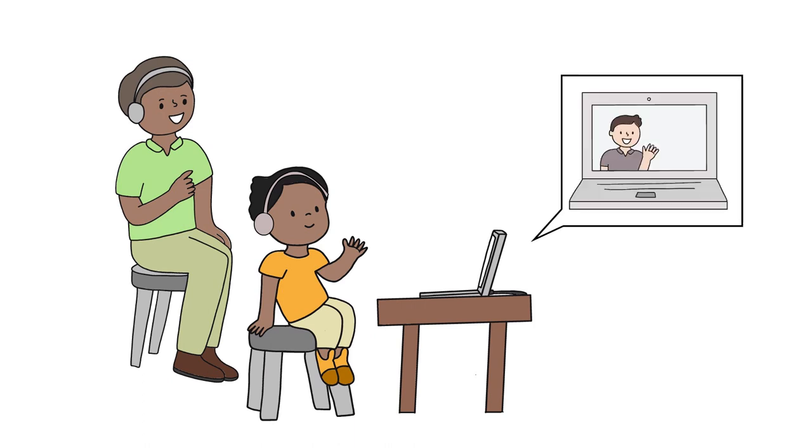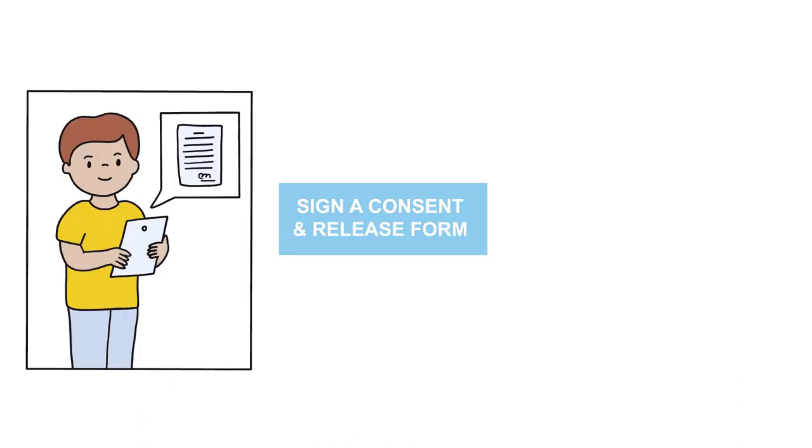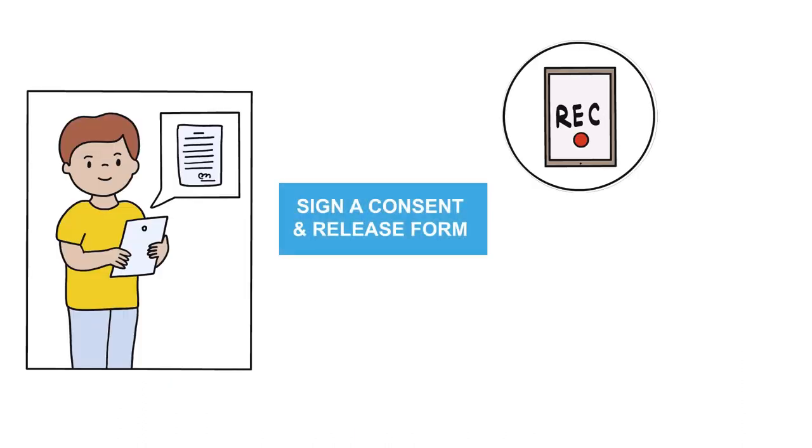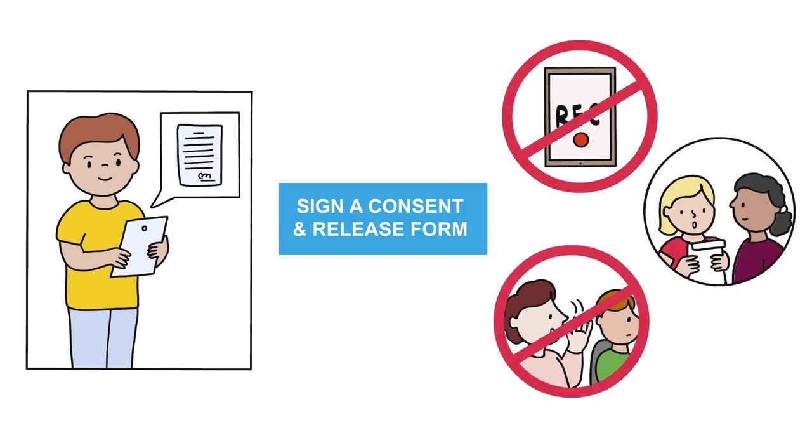Therefore, it is recommended that the adult sit behind and to the side of the child. Parents or guardians are required to sign a consent and release form that prevents them from recording the session, helping the child answer questions, and sharing content of the T&E test with others.